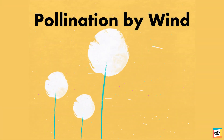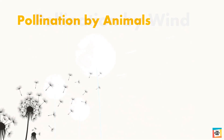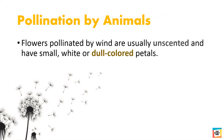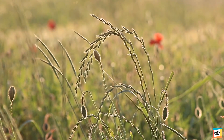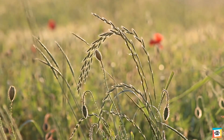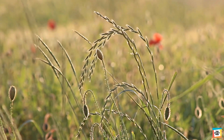Now let's see what pollination by wind is. Flowers pollinated by wind are usually unscented and have small, white or dull colored petals. They produce lots of tiny, light pollen grains that can be easily carried by the wind to other flowers.